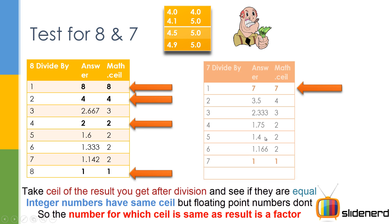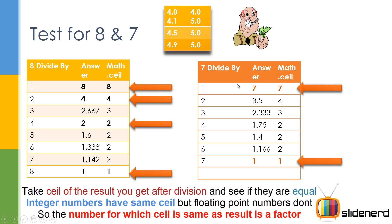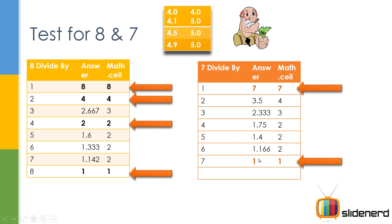Don't believe me? Let me show you exactly what I mean. Take 7 divided by everything from 1 to 7: 7 divided by 1 is 7, 7 divided by 2 is 3.5, 7 divided by 3 is 2.33. Take a look — if you apply Math.ceil, only the cases where 7 equals 7 and 1 equals 1 are the only two places where the answer and Math.ceil of the answer are equal. That means 1 and 7 are the only two factors. For 8, 8 equals 8, 4 equals 4, 2 equals 2 — meaning 2, 4, and 8 are the factors. Simple as that. This is exactly what we are going to do in the program.